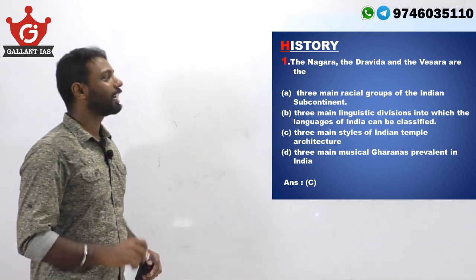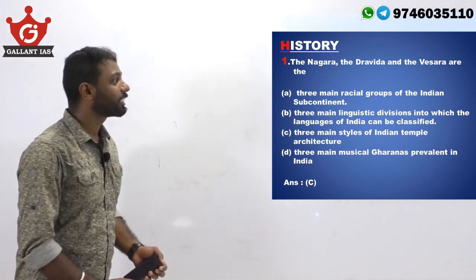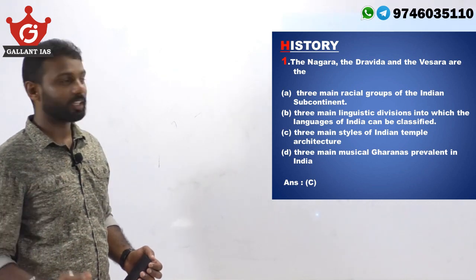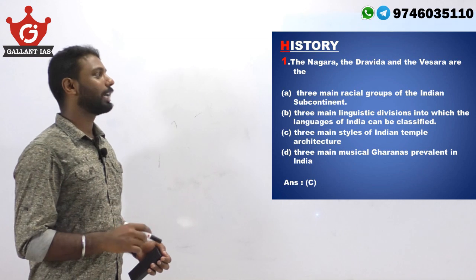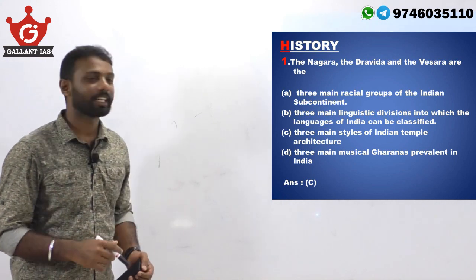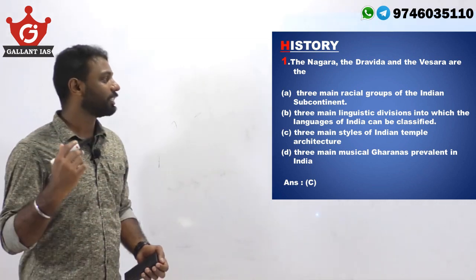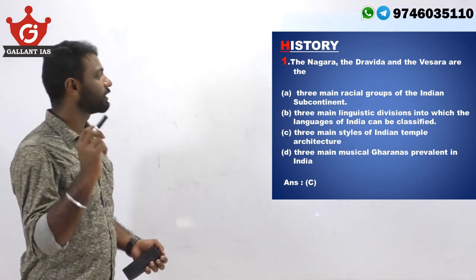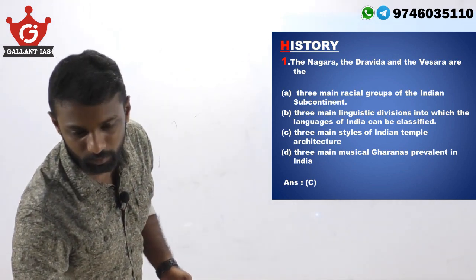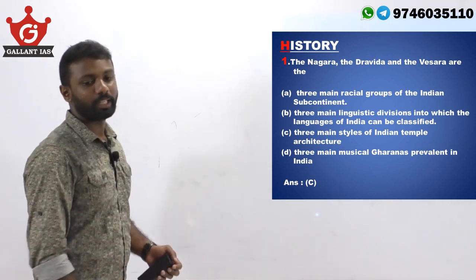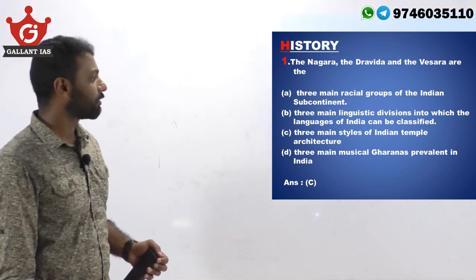The Nagara, the Dravida and the Vesera are the: Statement A, three main racial groups of the Indian subcontinent. Statement B, three main linguistic divisions into which the languages of India can be classified. Statement C, three main styles of Indian temple architecture. Statement D, the three main musical Gharanas prevalent in India.